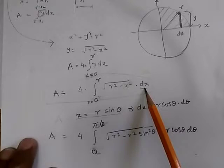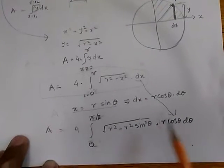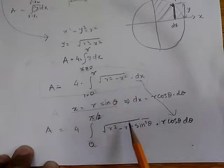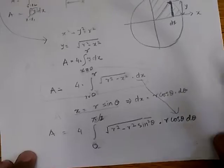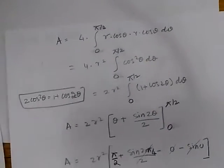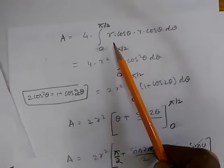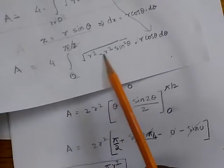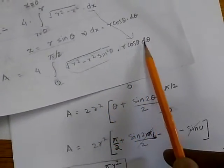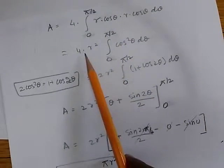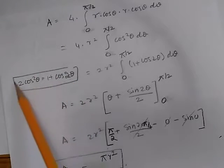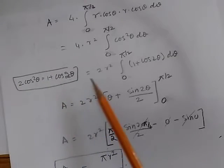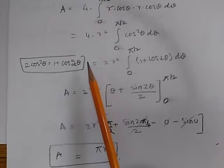Substituting dx = r·cosθ·dθ, the expression under the square root becomes r²(1 - sin²θ) = r²·cos²θ, so √(r² - x²) = r·cosθ. This term becomes r·cosθ, and together with r·cosθ·dθ, the integrand becomes r²·cos²θ·dθ. The whole area expression becomes 4r²∫cos²θ dθ. We use the identity 2cos²θ = 1 + cos2θ — memorize this, it appears repeatedly in mathematics.